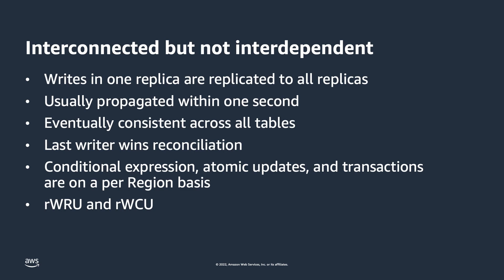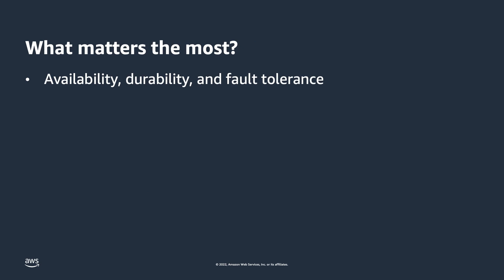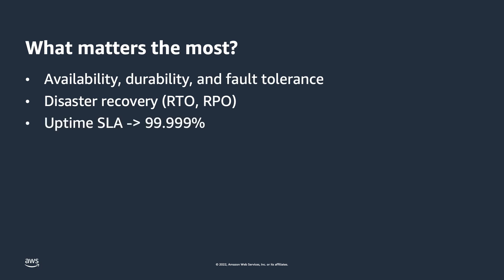Whether it is a capacity unit or a request unit is determined by the capacity mode the global table is in. So why does any of this matter? When you use global tables for DynamoDB, it gives your application higher availability, more durability, and better fault tolerance. In disaster recovery planning terms, your database would meet a recovery time objective of near zero and a recovery point objective of about one second. To strengthen that even more, using global tables means you get a database uptime service level agreement from AWS of 99.999%.